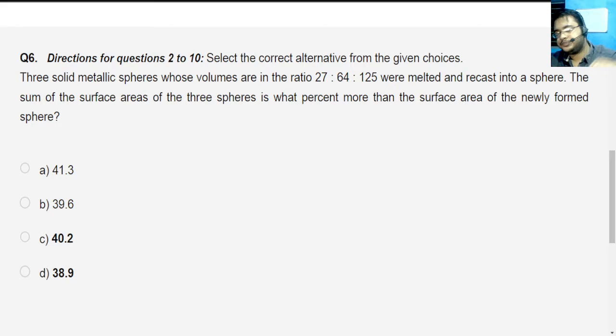Okay guys, so we'll look into this question. The question says three solid metallic spheres whose volumes are in the ratio 27:64:125 were melted and recast into a sphere. The sum of the surface areas of the three spheres is what percent more than the surface area of the newly formed sphere?